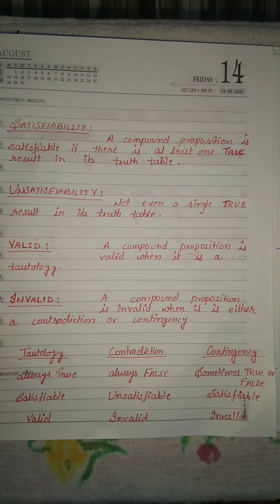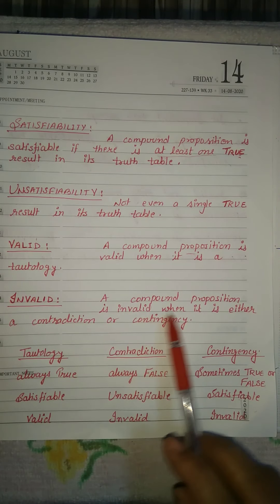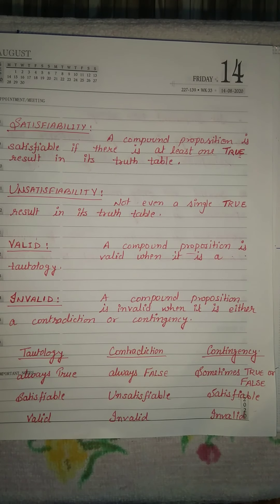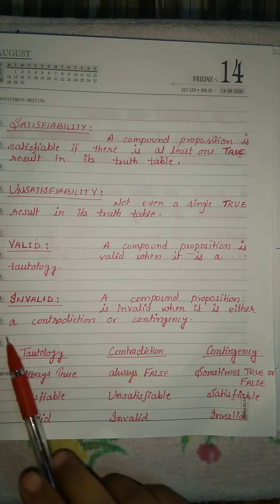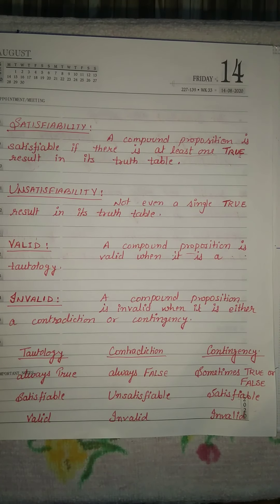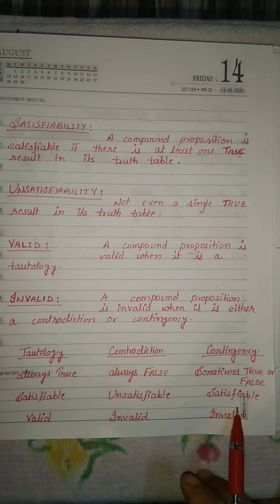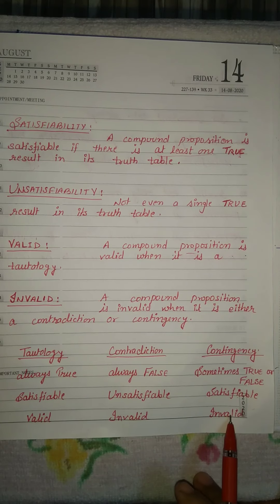Next is invalid. A compound proposition is invalid when it is either a contradiction or contingency. Either a contradiction or contingency. This is a very important point: a compound proposition that is a tautology is always valid, while a compound proposition that is not a tautology is invalid.